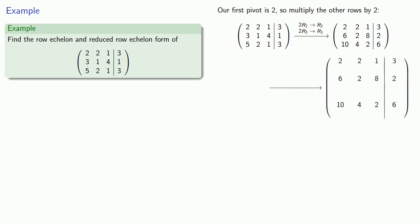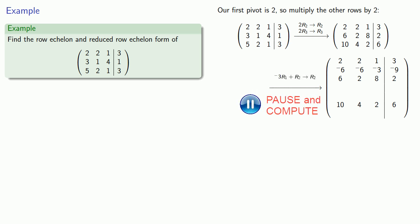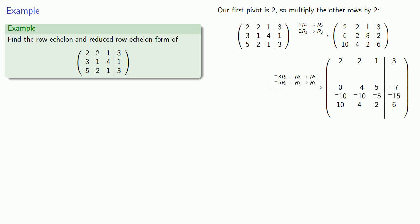If we multiply our first row by negative 3 and add it to the second row, that will eliminate the entry below the first row pivot, giving us 0, negative 4, 5, negative 7. Likewise, if we multiply the first row by negative 5 and add it to the third row, that will eliminate the entry below the first row pivot, giving us 0, negative 6, negative 3, negative 9.